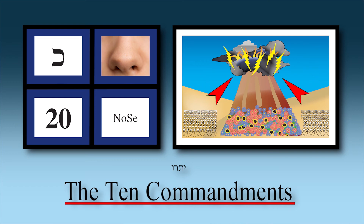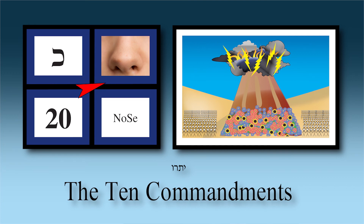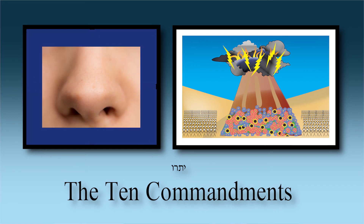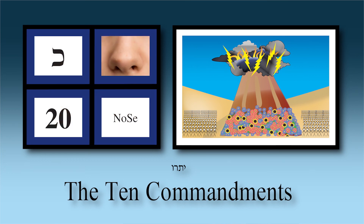Chapter twenty — Maamad HaSinai, the greatest event in world history — Mattan Torah. This event is witnessed by approximately three million Jews. You see lots of Yidin around the mountain, flowers on the mountain, fire and dark cloud, flames going up from the mountain to the heavens. HaKadosh Baruch Hu speaks to Klal Yisrael in front of three million witnesses. The simon is 'nose.' I imagine the mountain shaped like a nose: through the nostrils you can see fire coming out, you hear the shofar blowing from the nostrils, and black cloud coming out. Maamad HaSinai — chapter twenty nose.